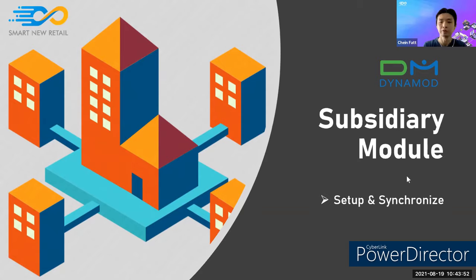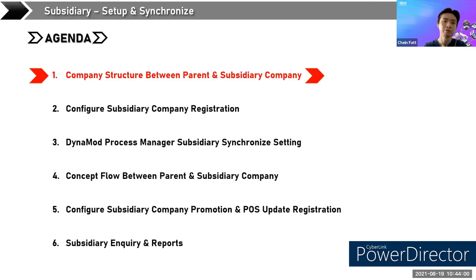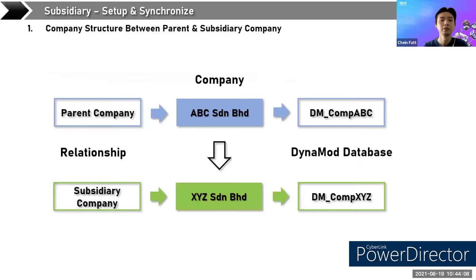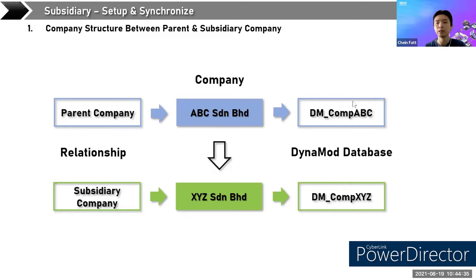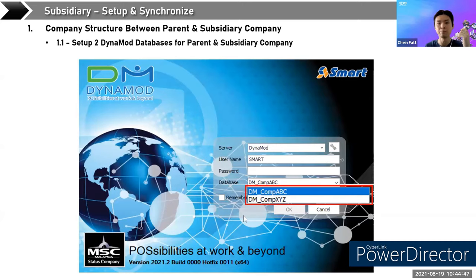Today I will talk more about the setup and synchronization for the subsidiary company module. Today we will cover six topics. The first one is the company structure between the parent and subsidiary company. This is the structure of the company between the parent and subsidiary company. We've got two companies: one is ABC Company, and the other is SYJ Company. ABC is the subsidiary company — this is the relationship. At Dynamo, we have to create two databases: one for ABC and one for SYJ.